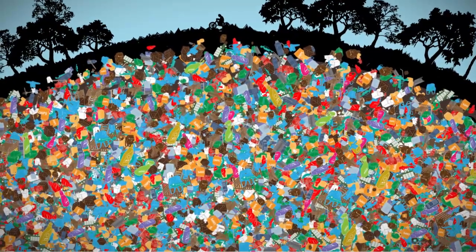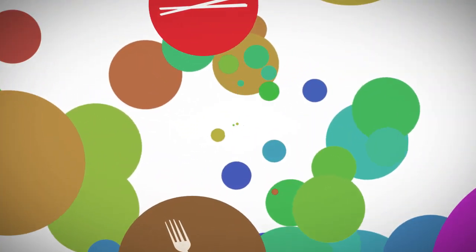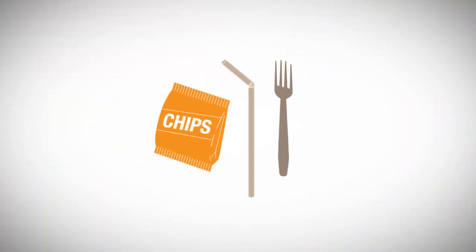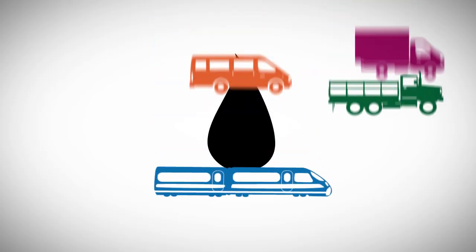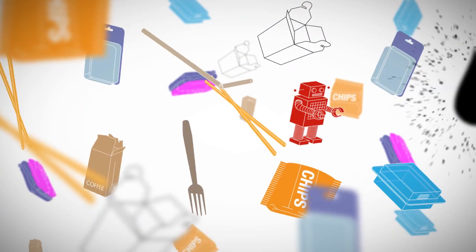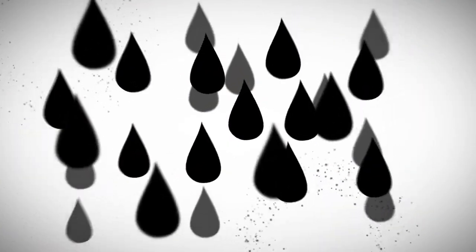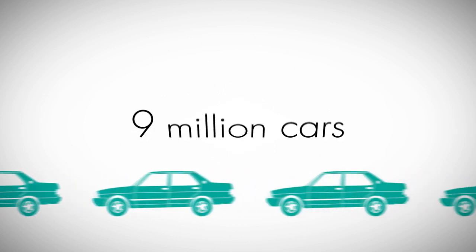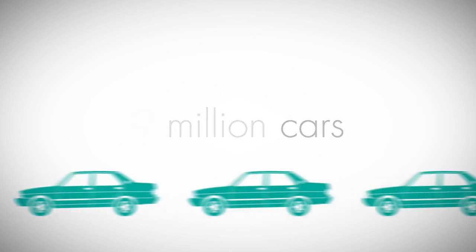But there are other technologies that could turn more plastics into energy and other valuable things. One of them is called plastics-to-oil. Just like it sounds, this technology converts non-recycled plastics into oil that can be refined and used as fuel for cars and other vehicles. And get this, if all the non-recycled plastics and municipal solid waste in the U.S. were converted this way, we would create enough oil to fuel nearly 9 million cars for a whole year.